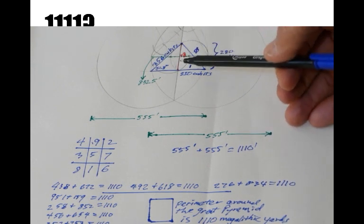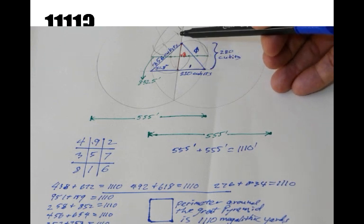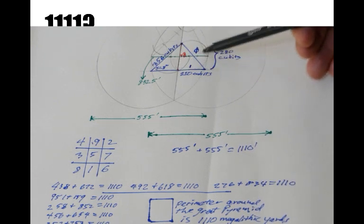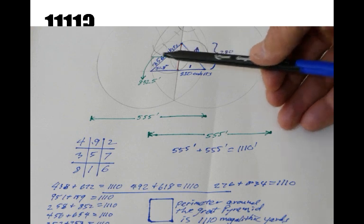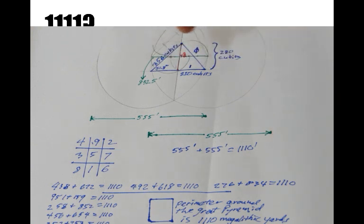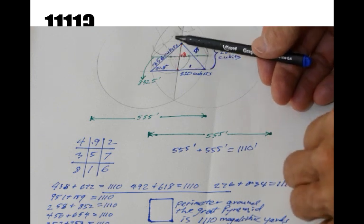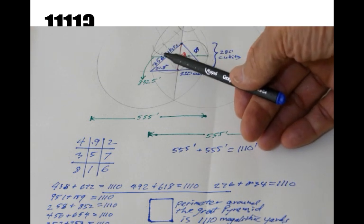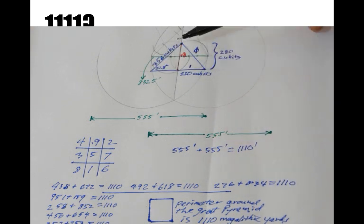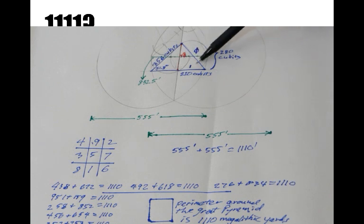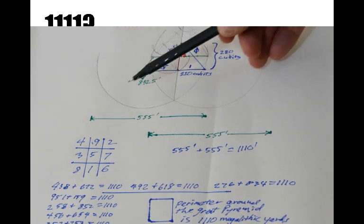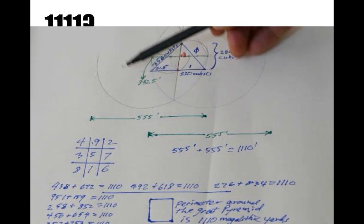If you put this into real number units, okay, so you have 356 cubits on the side slope, 220 cubits for the half base and 280 cubits high. Okay. So the Great Pyramid is there.